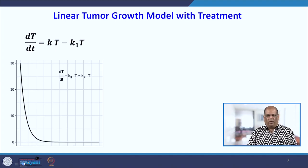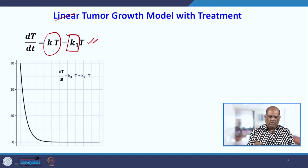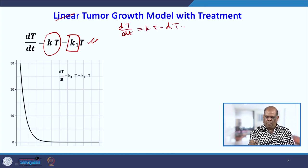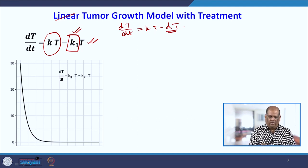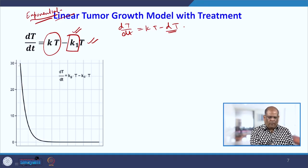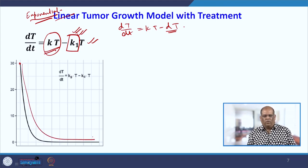Now let us see what happens with treatment. The tumor is growing exponentially and we subtract k₁T, representing that due to drug effect the tumor is being killed at rate k₁. Unlike the earlier model where minus dT represented natural death, here the tumor is getting eradicated due to a drug. The curve starts at some initial tumor value, grows due to the growth term, but the drug kills the tumor cells and it goes down to zero.